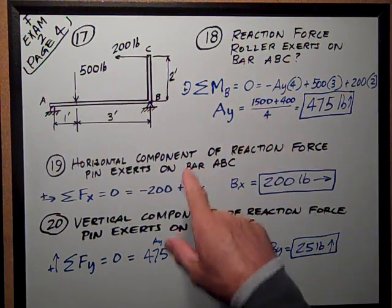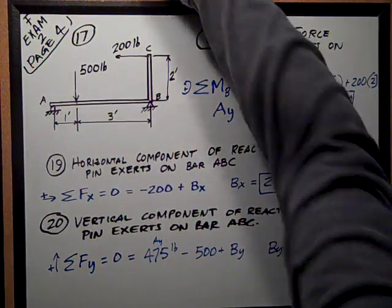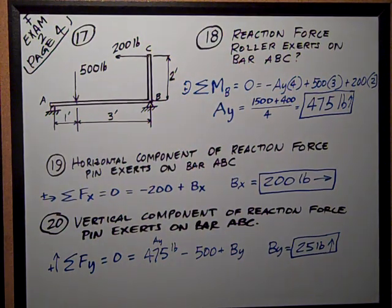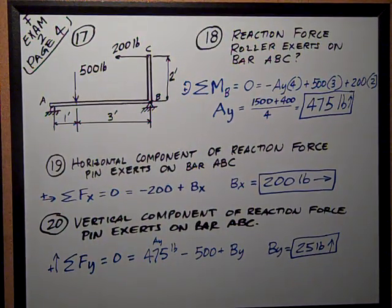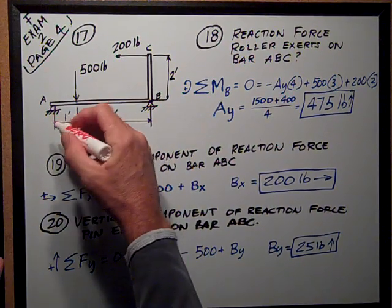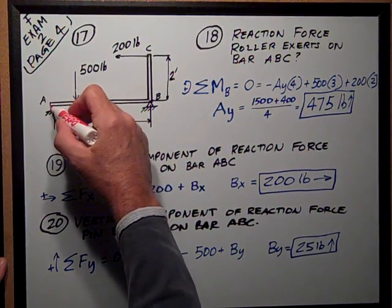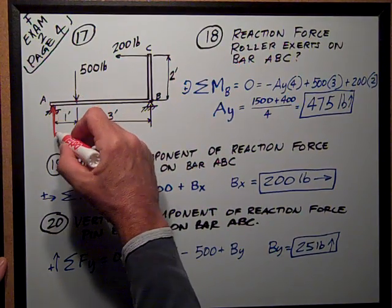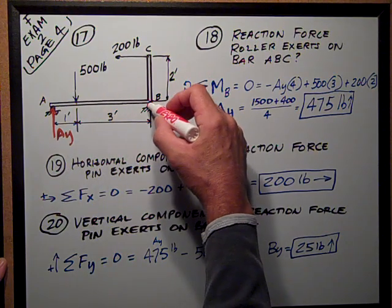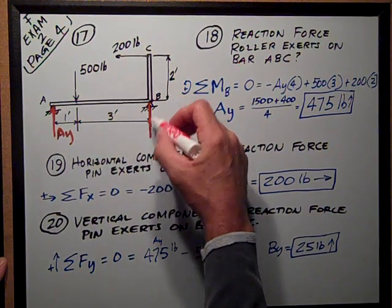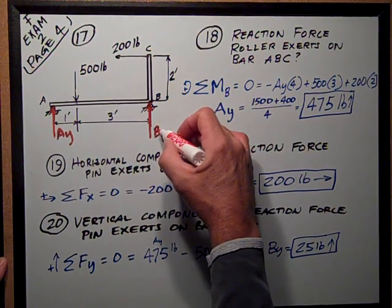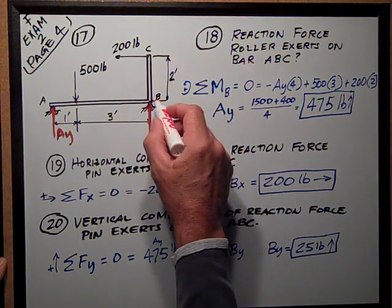Number 18, so we're supposed to draw a free body diagram. What we're doing on a free body diagram is replace the supports with forces. So I'm just going to put AY here at this location, BY and BX because it is a pin.